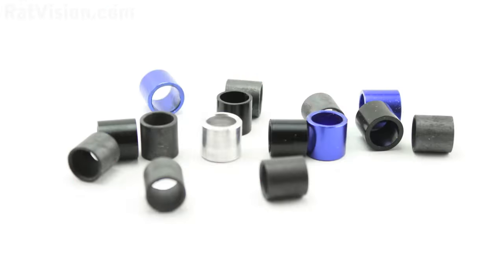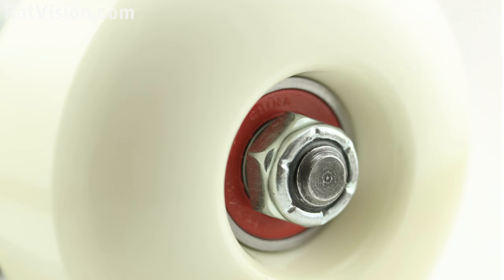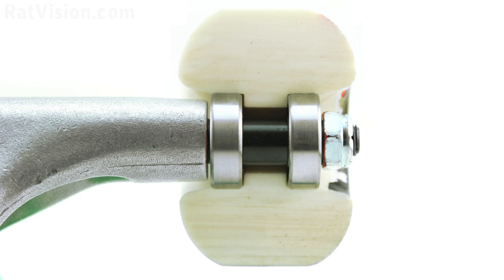Bearing spacers are these small metal cylinders that sit between both bearings inside a wheel. Their purpose is to allow the axle nut to be tightened all the way down, allowing the inner rings from both bearings to be stationary on the axle so the wheel can rotate efficiently.